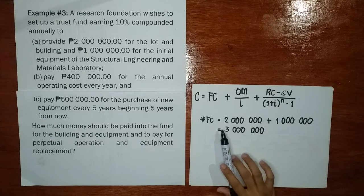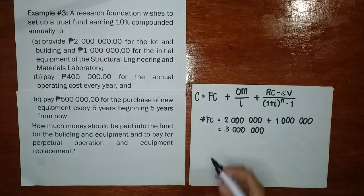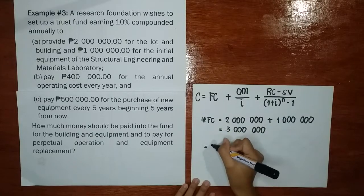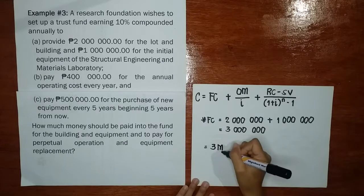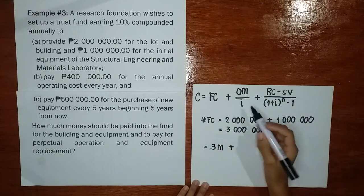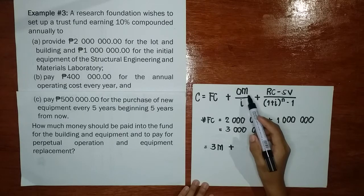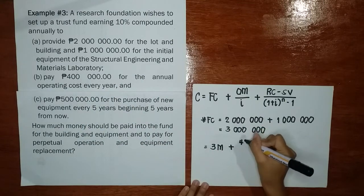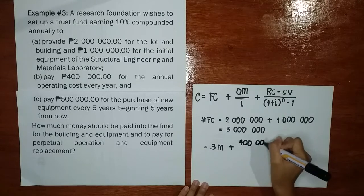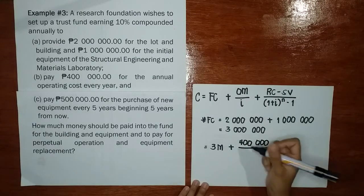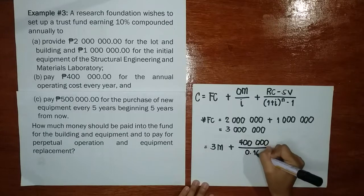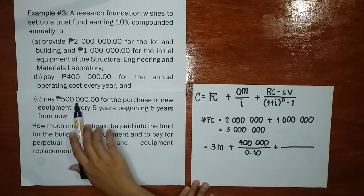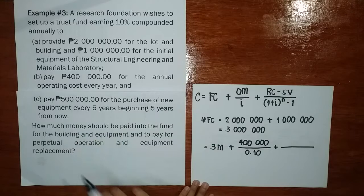Since we have the first cost, we can now place it into the formula. So, going directly with the formula: we have 3M. Plus OM — our maintenance cost, which is the annual operating cost of 400,000. Our interest rate is 10%, so 0.10. Plus RC, which is 500,000 for the purchase of new equipment.